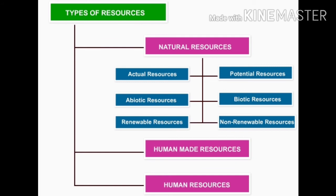Next, on the basis of distribution, the first point is ubiquitous resources. Ubiquitous resources are the resources that we can find everywhere, like air, water, land, and sunlight. Next, we have localized resources. Localized resources are found only in very specific places, such as gold, silver, petroleum, coal, and minerals.